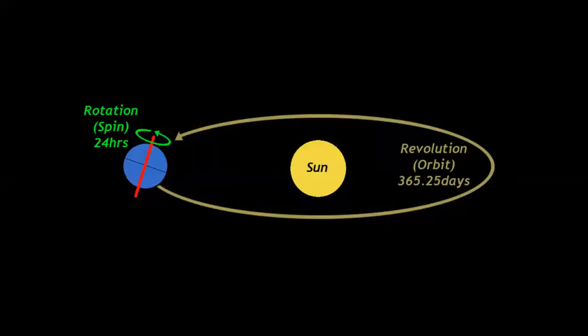The Earth's rotation on its axis is once every 24 hours or one day. The Earth's revolution, as it orbits the Sun, takes 365 and a quarter days or one year.